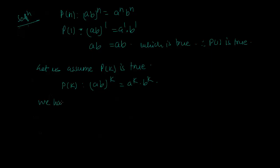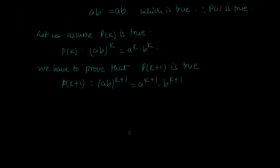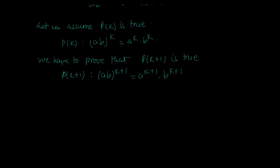We have to prove that P(k+1) is true. P(k+1) states that (ab) to the power k+1 is equal to a to the power k+1 times b to the power k+1. So I have to come from the assumed statement to this result.